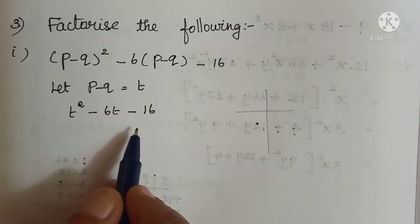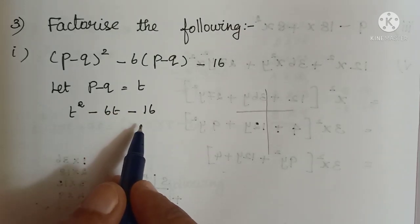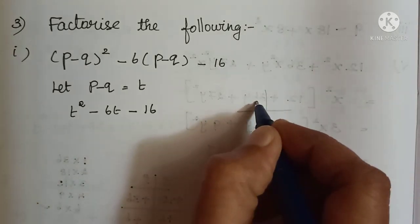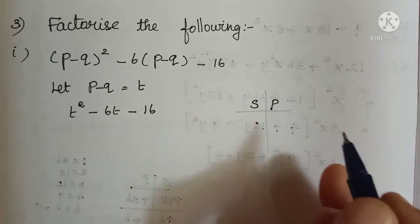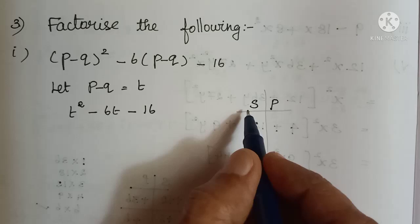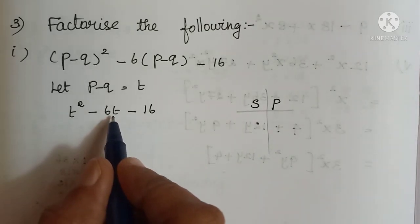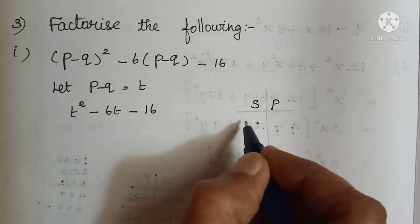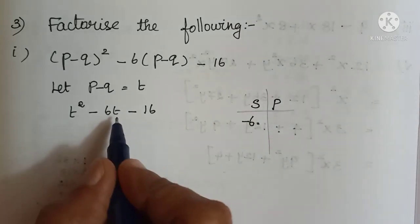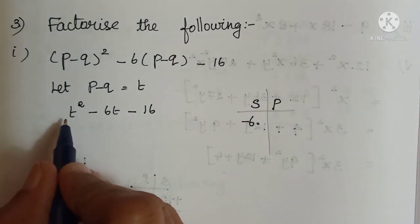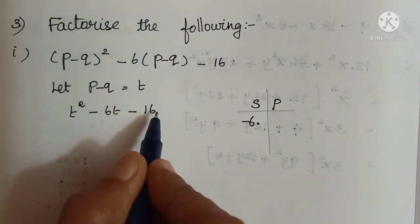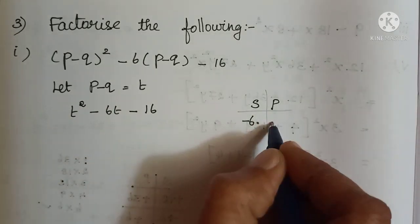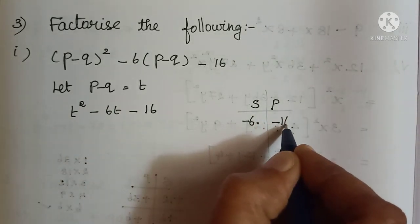Now this is in quadratic equation form, so we can use the sum-product method here. Sum place: we take the coefficient of t, which is minus 6t, so we write minus 6. Product place: the coefficient of t squared is 1, so 1 into minus 16 gives minus 16.